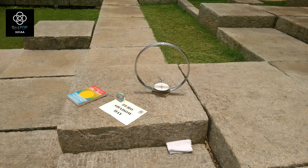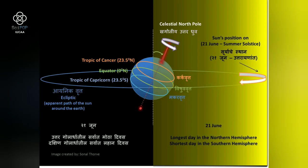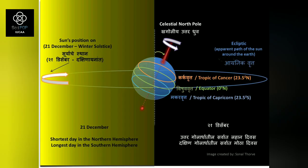Zero shadow day can be observed only from places at latitudes between 23.5 degrees south and 23.5 degrees north.